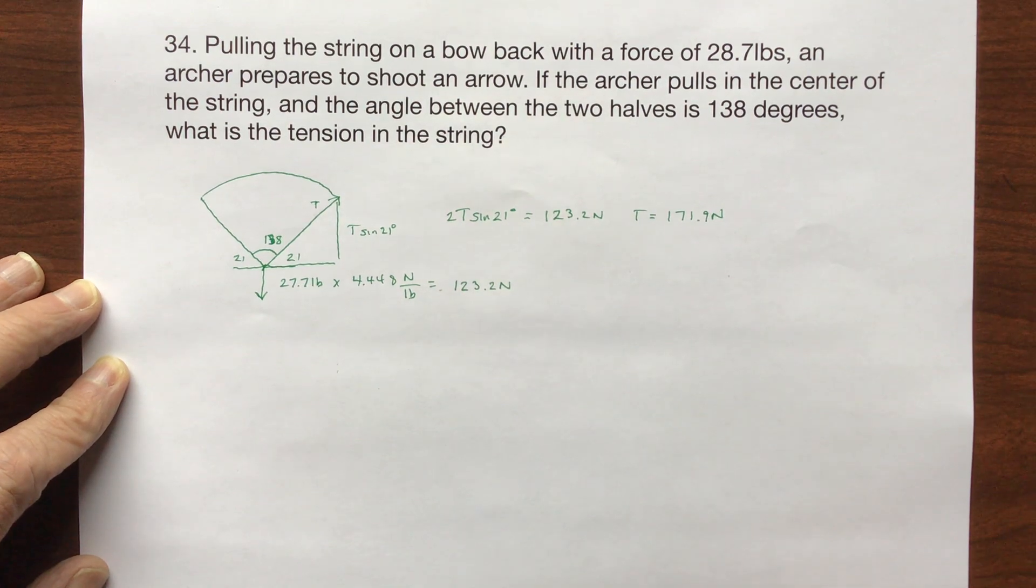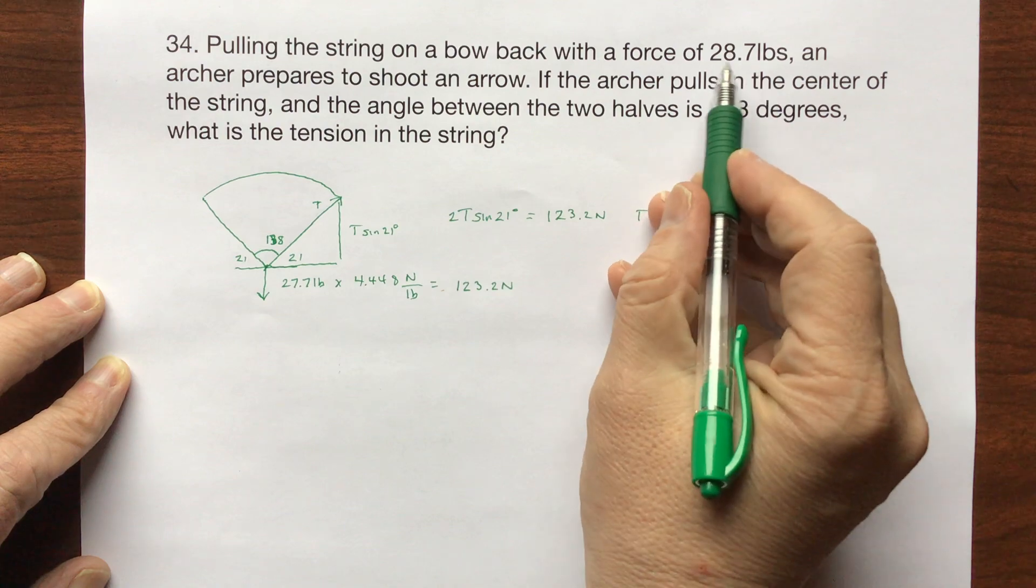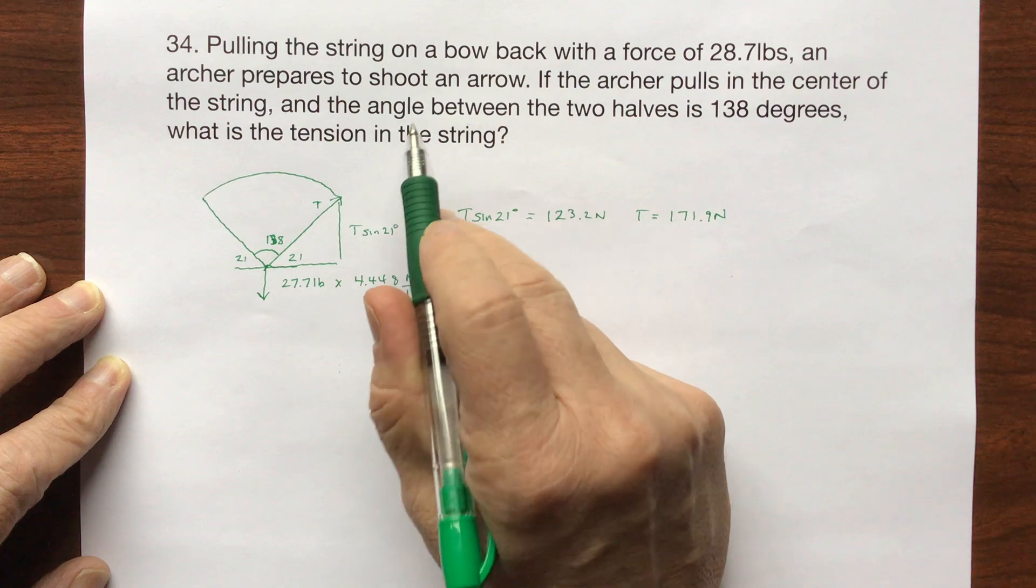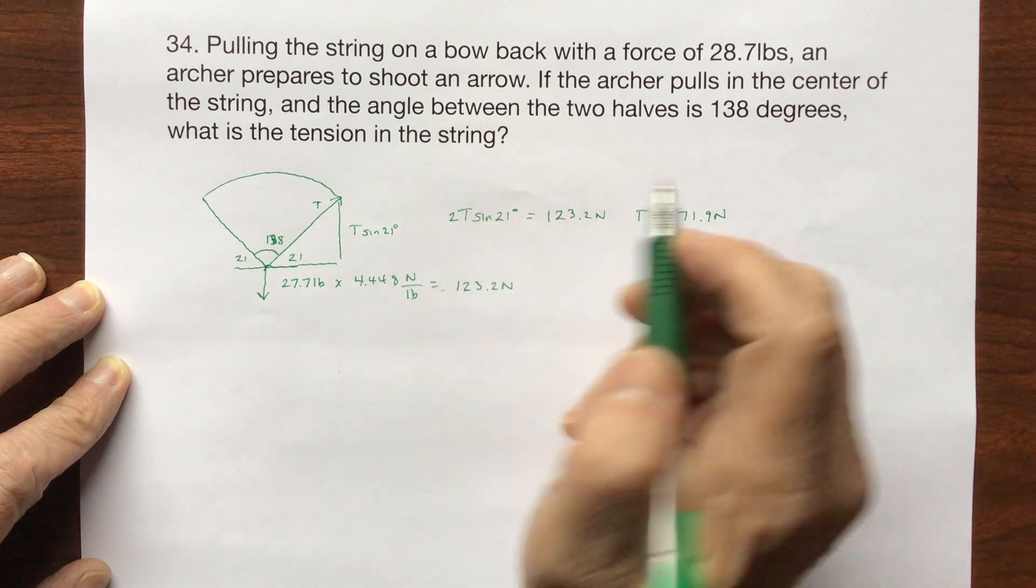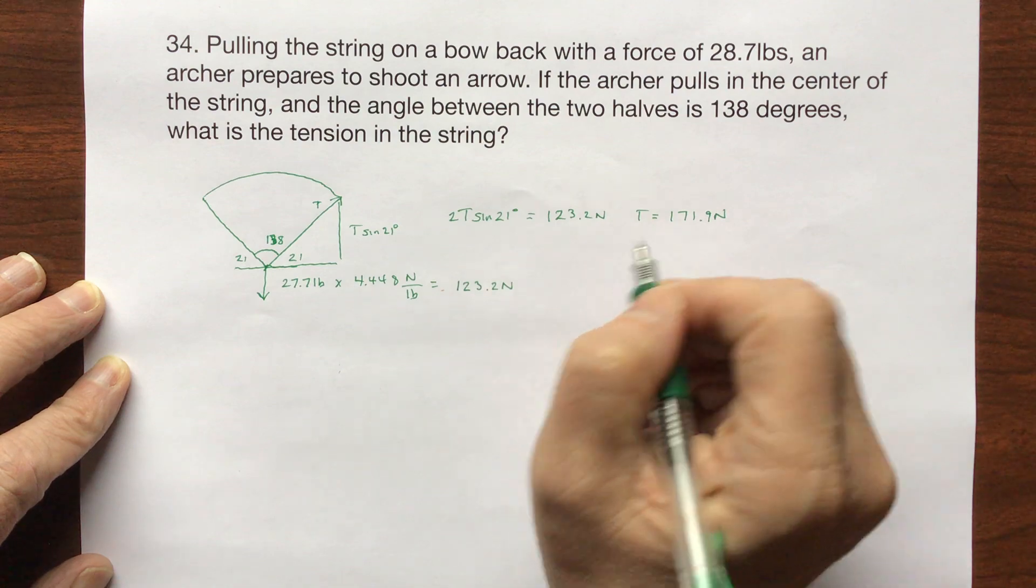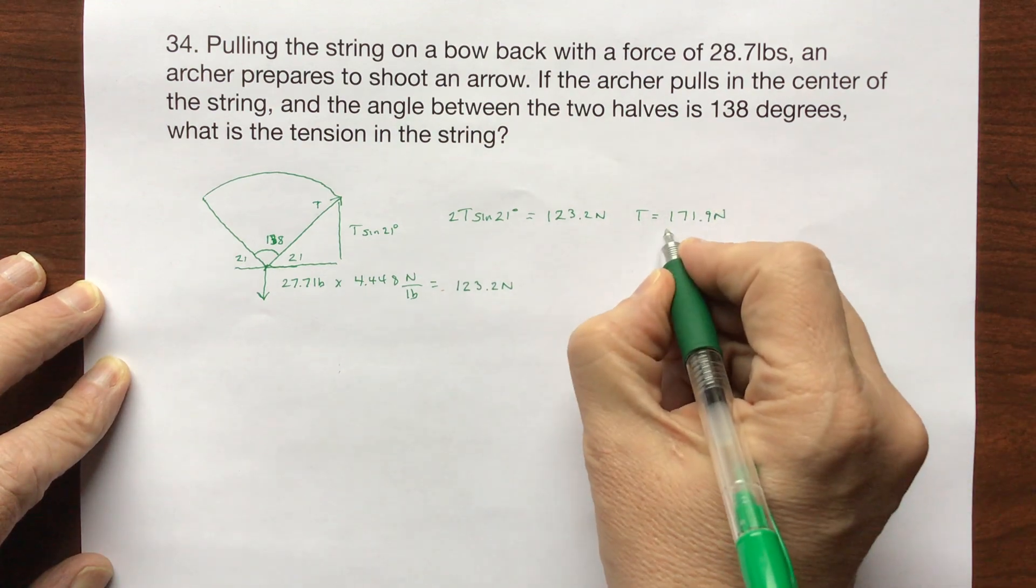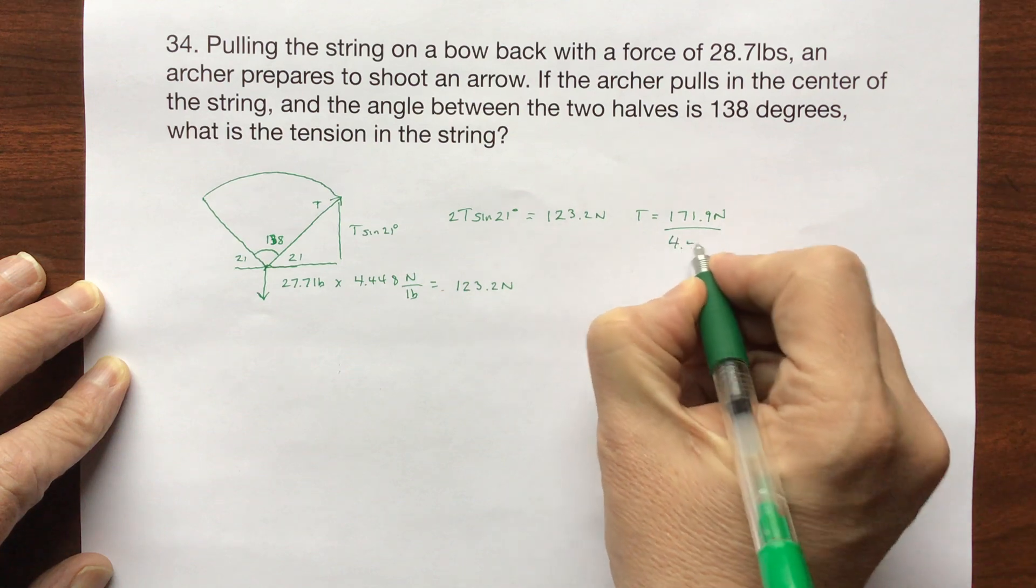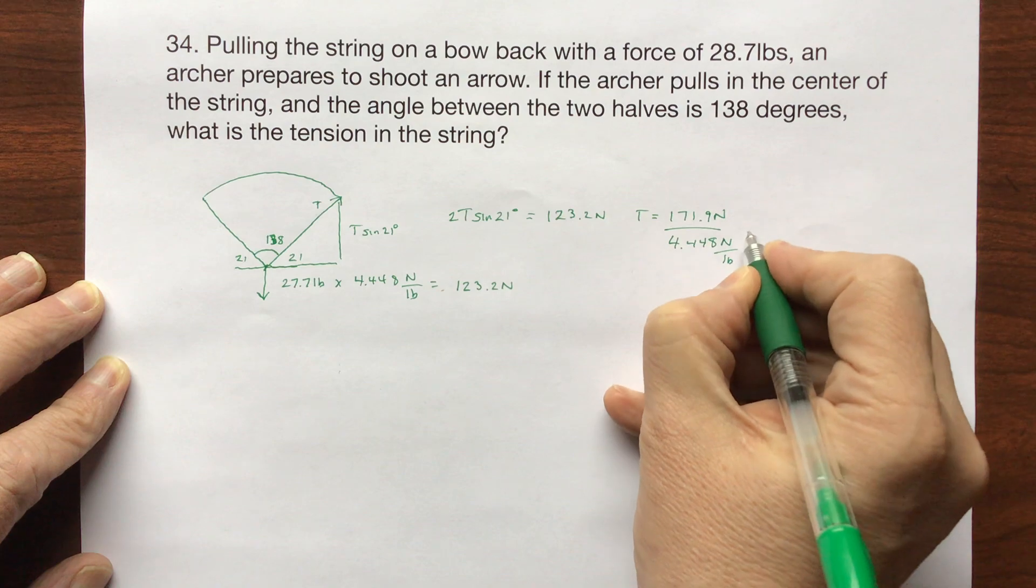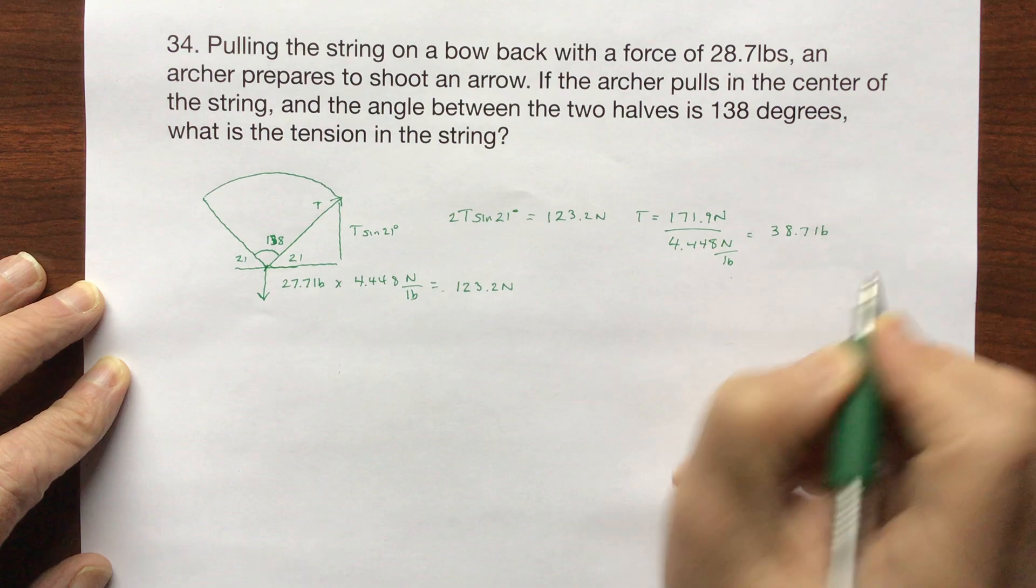Problem that I see, or maybe it's not a problem, it just seems to be a problem, that they asked me that I pulled it back in pounds and they asked me the tension in the string. It makes me think that they're wanting the tension in pounds. If they gave it to me in pounds and asked what the tension is, that it's probably in pounds. So I need to divide again by 4.448 newtons per pound, and that'll give me pounds, 38.7 pounds.